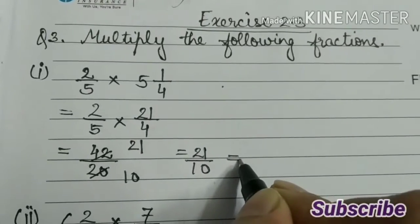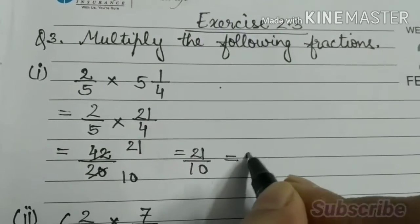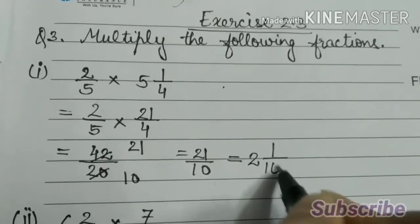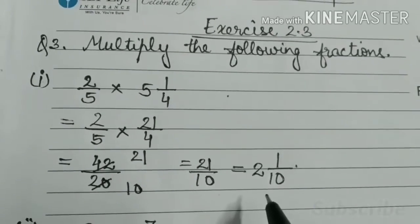Let us change it to mixed fraction. 10 2s are 21 by 10. So this is the answer.